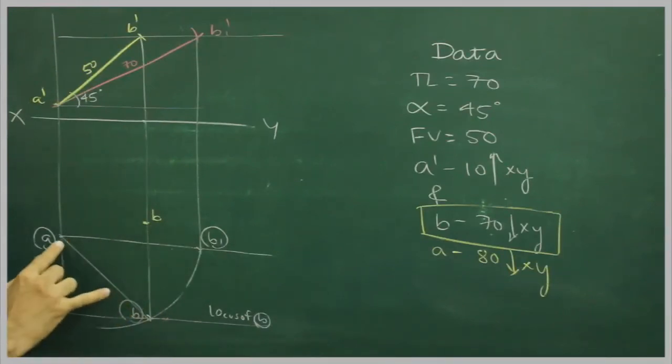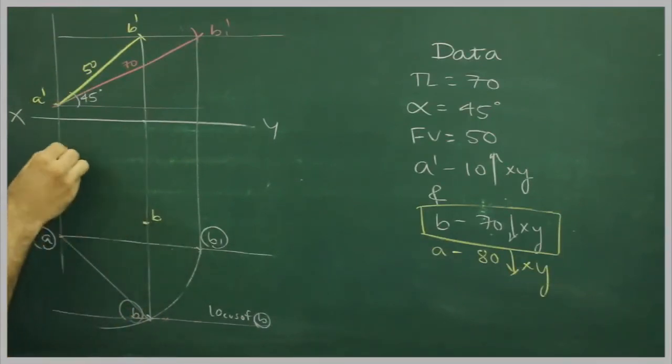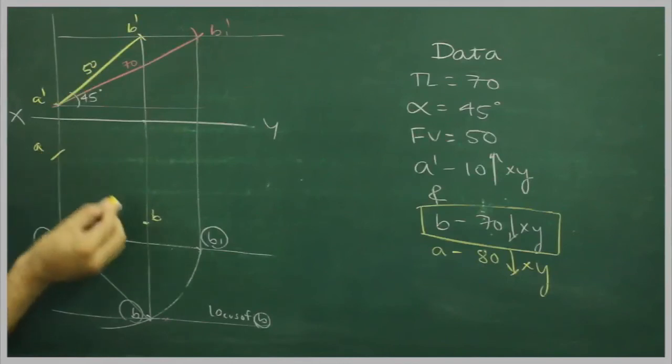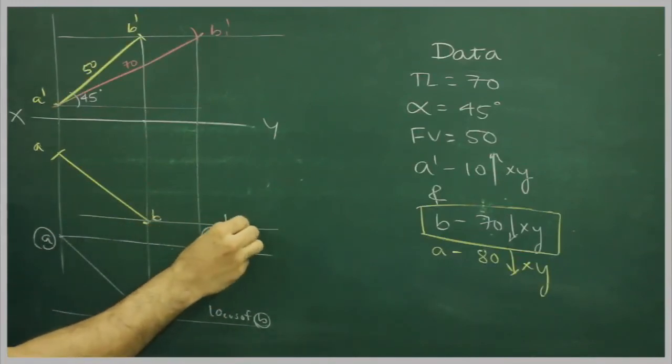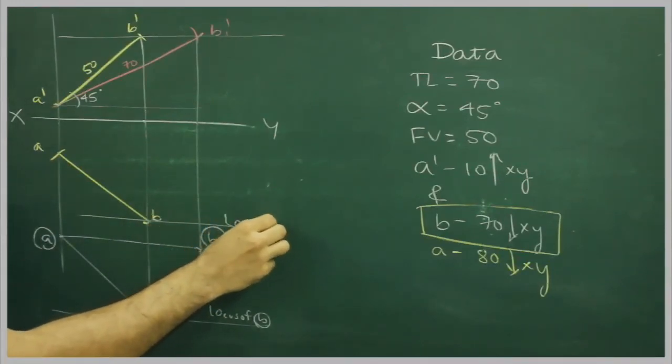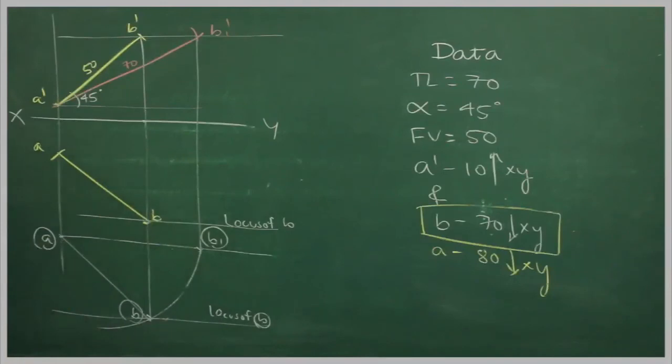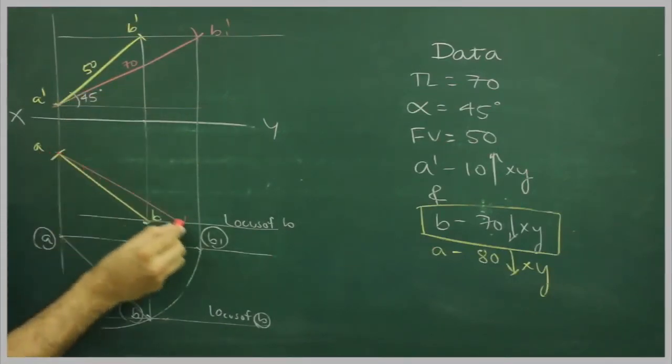Take B to A in your compass, from B, cut off this side, so you will get A, so you got top view. You can draw horizontal line from here, so this is our locus of B. Take true length 70mm, from here you can cut directly.